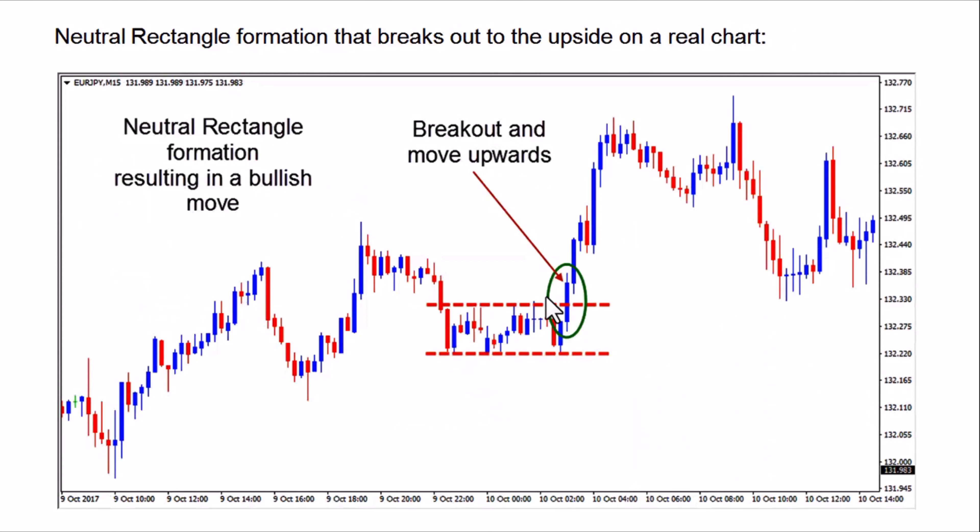So that is the neutral rectangle pattern. In a continuation pattern we have a rectangular formation, and in a neutral pattern we also have a rectangular formation. They are the same thing but different in their principle and analysis. Thank you guys, God bless you. Don't forget to subscribe, like, and share this video. Bye for now. Peace.